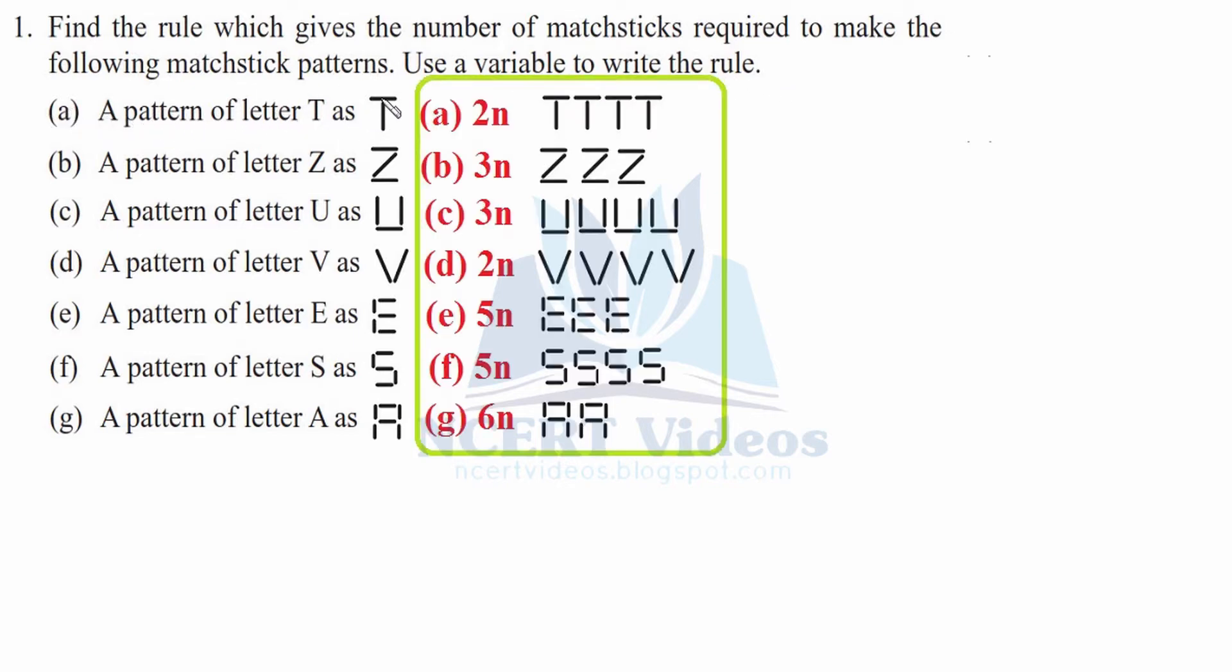First is the pattern of letter T, which is formed by two matchsticks - one vertical and one horizontal. So its formula would be 2 into N because for making 1 T, you need 2 matchsticks. Therefore, 2N is the formula to make letter T. For instance, if you want to make 4 T's, you would require 8. You can count them, these will come out to be 8 matchsticks. This is how you do such type of questions.